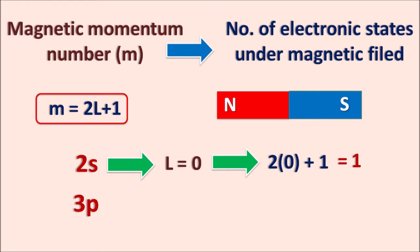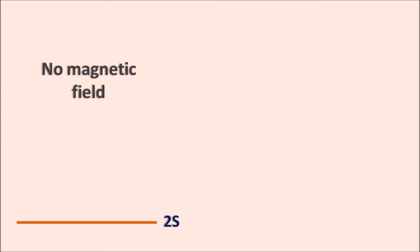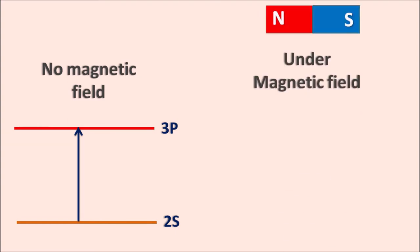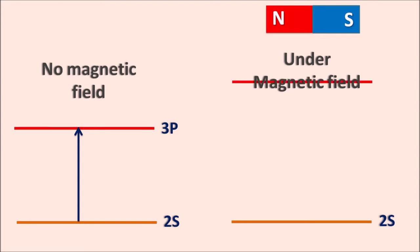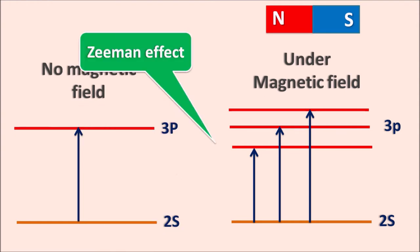But in case of the 3p orbital, for p orbital L equals 1, so M equals 2 times 1 plus 1, which is 3. So the 3p orbital will have three electronic states under the applied magnetic field. This splitting of electronic states is called the Zeeman effect. The 2s orbital cannot split because it has only one electronic state (M equals 1), but the 3p orbital has M equals 3, meaning it exists as three electronic states. So electrons can jump from the 2s orbital to the 3p orbital in three ways.